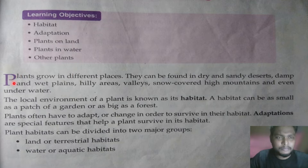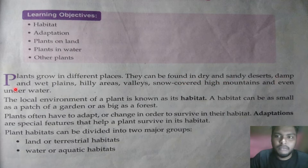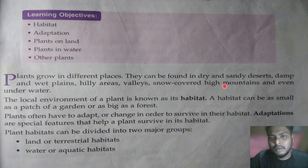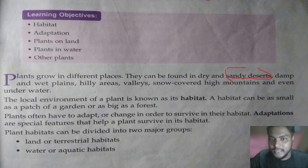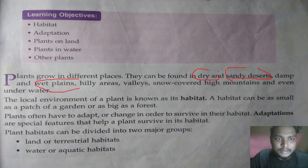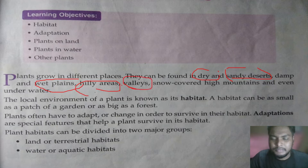Plants grow in different places. They can be found in dry and sandy deserts, damp and wet plains, hilly areas, valleys, snow-covered high mountains, and even underwater. This means plants grow in different geographical locations — in sandy deserts, wet plains, hilly areas, and valleys. A plant can grow anywhere where it will get a favorable condition.